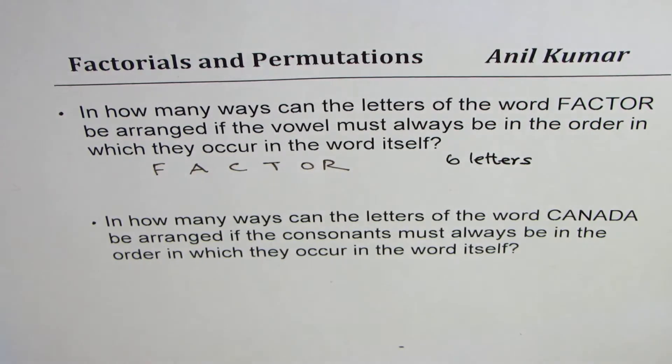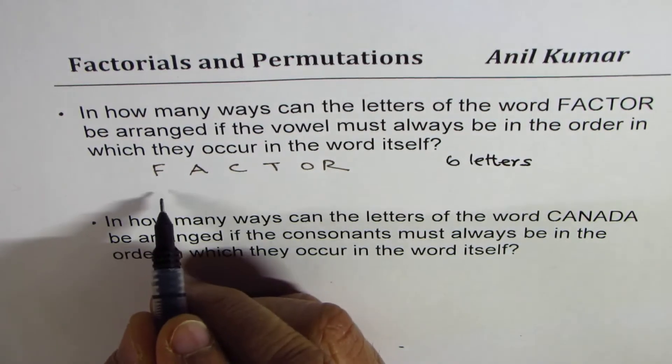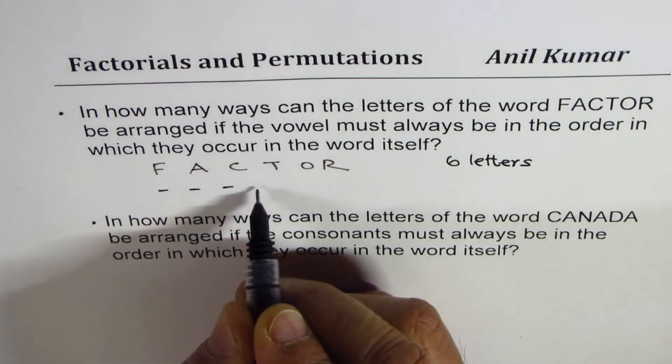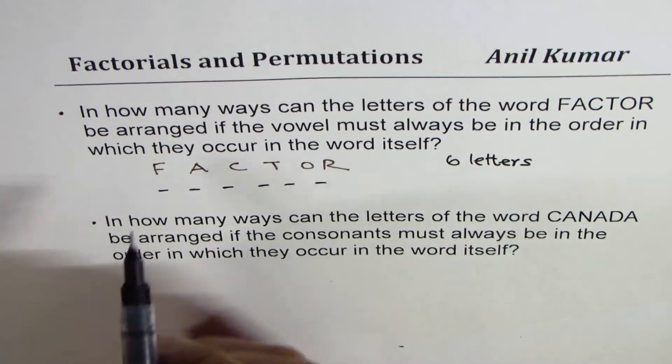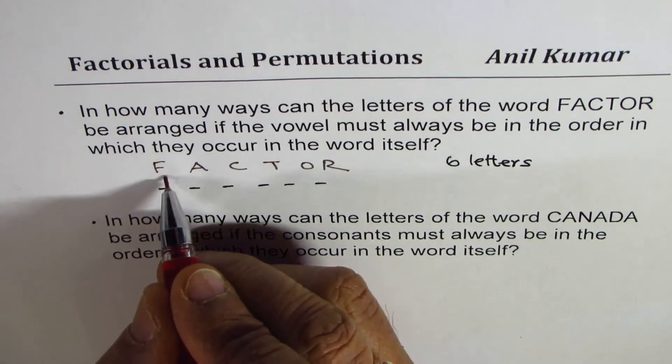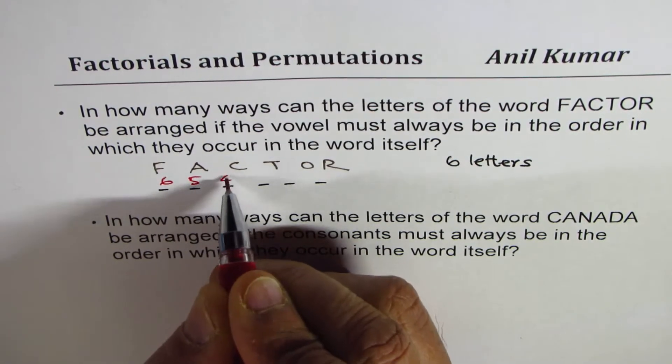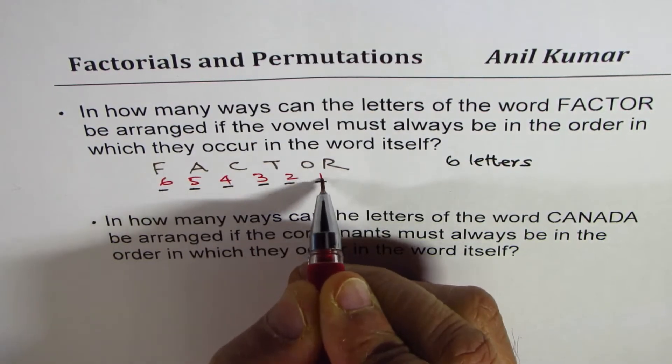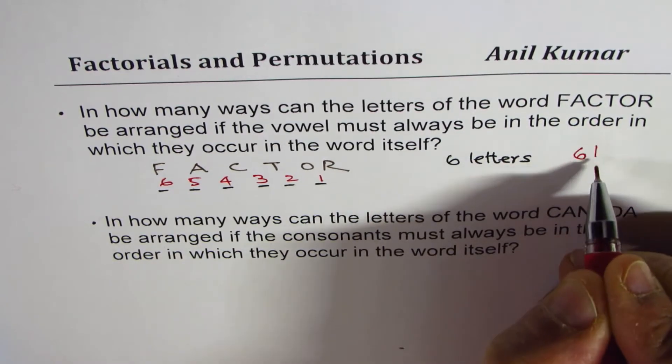6 letters will give you how many combinations. So if I have 6 places to fill, I could fill the first one with any one of these 6, then 5, then 4, 3, 2, 1. And so we get 6 factorial ways.